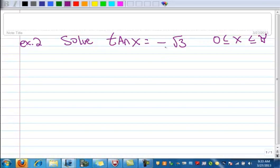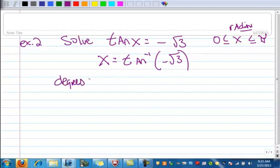Let's rewrite it in the other form using our inverse notation. So we know that x is inverse tangent of negative square root of 3. An easy way to do this, and I do this all the time, is I change my mode to degrees in my calculator. Then I type this in, and I get negative 60 degrees.